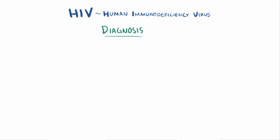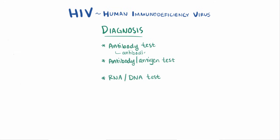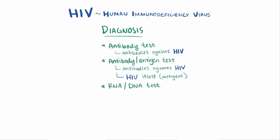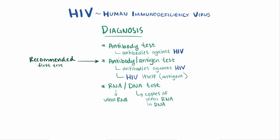For diagnosis, there are a few types of HIV tests: antibody tests, antibody/antigen tests, and RNA/DNA tests. Antibody tests look for antibodies the body has made against HIV. Antigen tests look for the virus directly, so antibody-antigen tests detect both. RNA tests screen for viral RNA, and DNA tests look for copies of the viral RNA, since as a retrovirus it copies its genetic material into DNA. For screening purposes, the recommended test is the antibody-antigen test, which is better at identifying early infection, followed by a confirmatory test looking for antibody or nucleic acids.